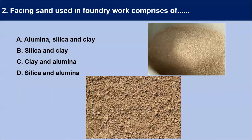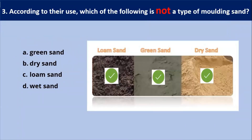Next question: facing sand used in foundry work comprises of — so naturally the facing sand used in foundry work comprises of silica and clay, because clay acts as a binding agent when mixed with silica sand to provide high strength, also maintaining shape and other characteristics at high temperatures. Our answer is B — silica and clay.